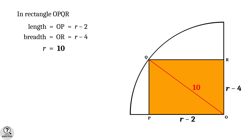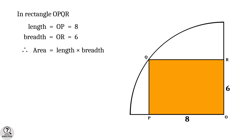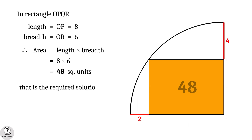For our rectangle, the length is 10 minus 2 equals 8 units and the breadth is 10 minus 4 equals 6 units. Therefore, the area of the rectangle is length times breadth, which equals 8 times 6 equals 48 square units. And that is the solution we are looking for.